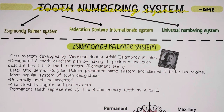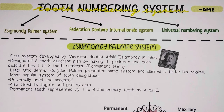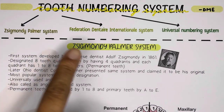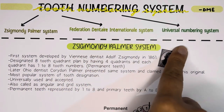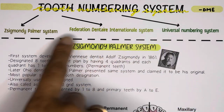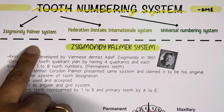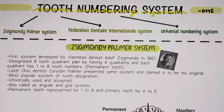Hello everyone, welcome back to Dentistry Made Easy. The topic we are going to talk about in today's video is the tooth numbering system, from dental anatomy. There are various tooth numbering systems, but the major three are the Zsigmondy-Palmer system, the FDI system, and the Universal Numbering System. We are going to see each one of them one by one.